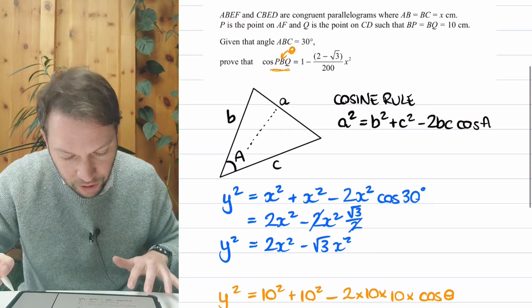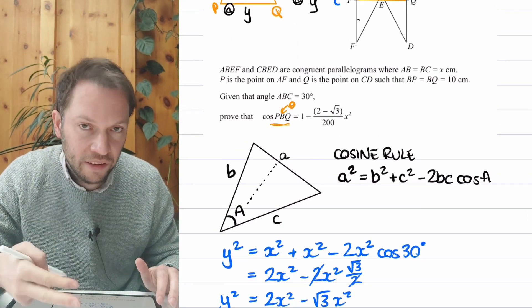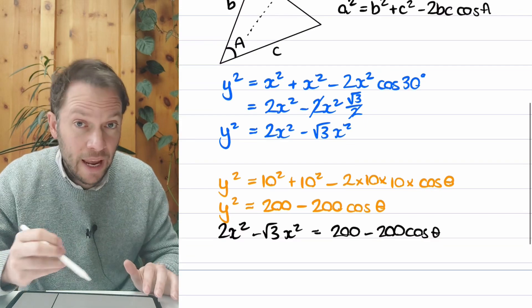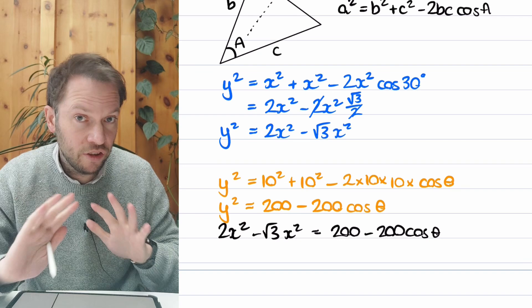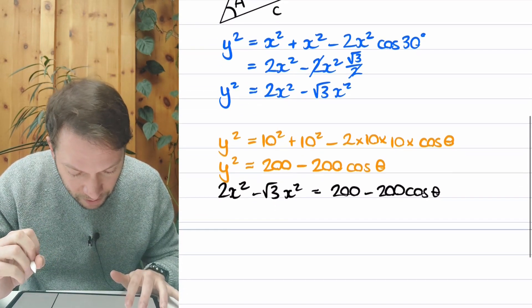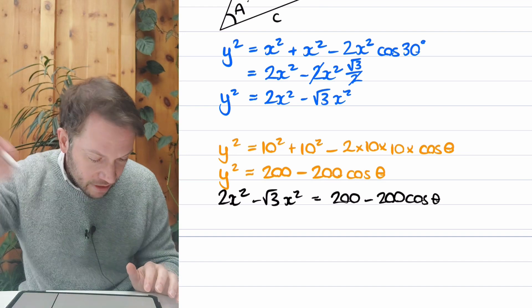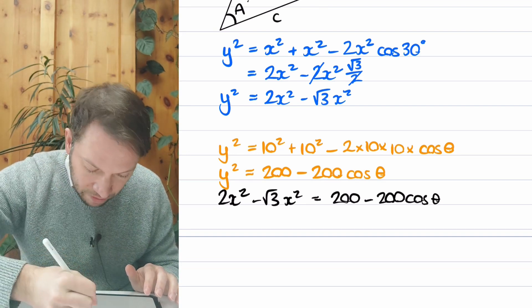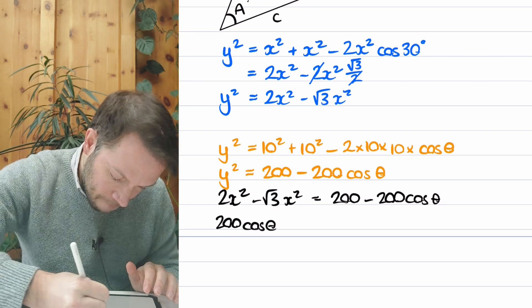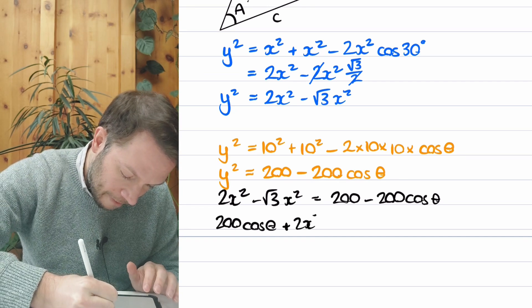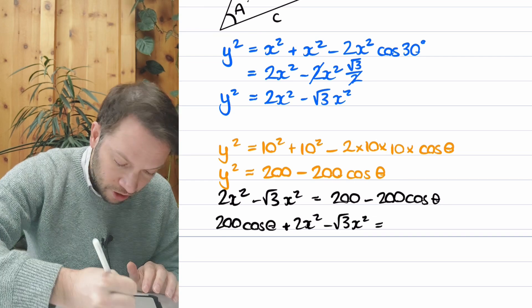Now, let's look at what we're trying to prove. We're trying to prove cos of theta, cos of angle PBQ is something. So we just need to make cos of theta the subject of the equation, and then we're done with the proof. And we've hopefully shown we're going to get that expression there. So how are we going to do that? Well, I'm going to add the 200 cos of theta to both sides first. So 200 cos of theta plus 2X squared minus root 3X squared is equal to just 200.